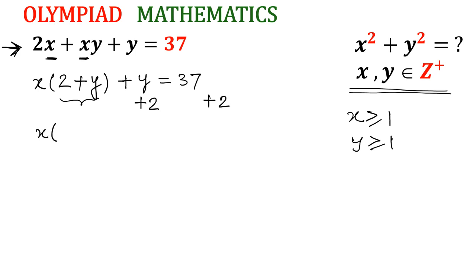So the equation will convert to x times (y plus 2) plus (y plus 2) equals 39. So we can see y plus 2 is common. I will take y plus 2 common. (x plus 1) times (y plus 2) is equal to 39.